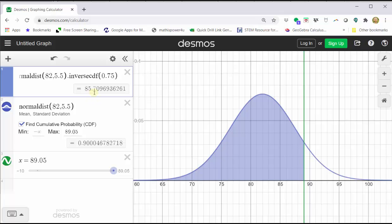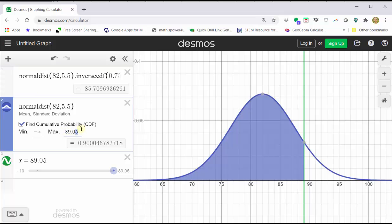Again, let's verify this graphically by going to cell two and changing the max to 85.71. And we can see the area to the left is almost exactly 0.75.